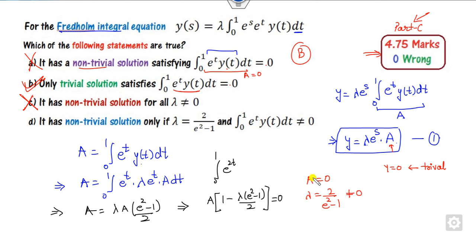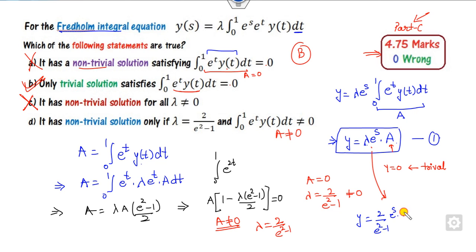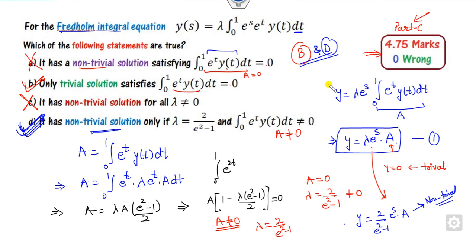The equation has a non-trivial solution only if a is non-zero, which requires λ = 2/(e² − 1). Substituting back, y = λ e^s · a with a non-zero gives a non-trivial solution. So this option is also correct. Therefore, the right answers are B and D.